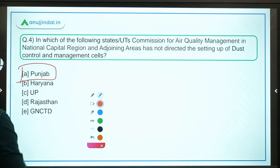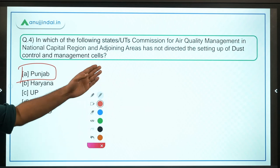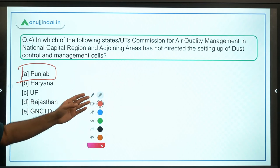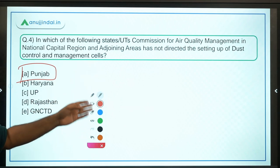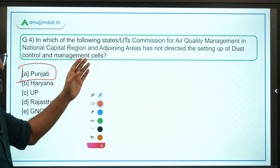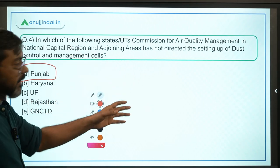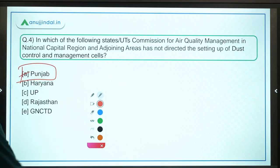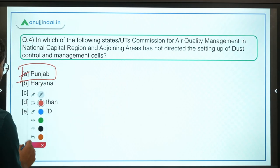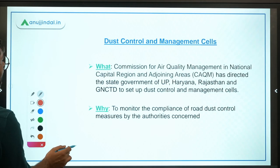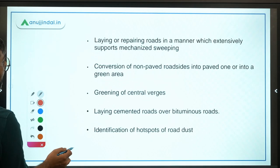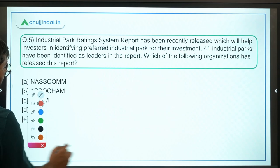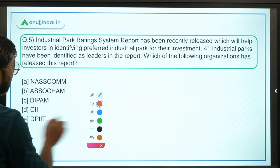Since the question asks in which state CAQM has not directed the setting up of a dust control and management cell, and the directed states are UP, Rajasthan, Haryana, and Delhi — Punjab is the correct answer. Moving ahead to question number 5, which is the last question for today.